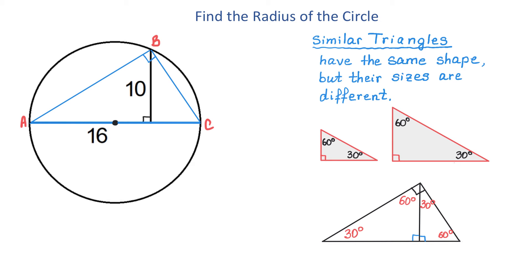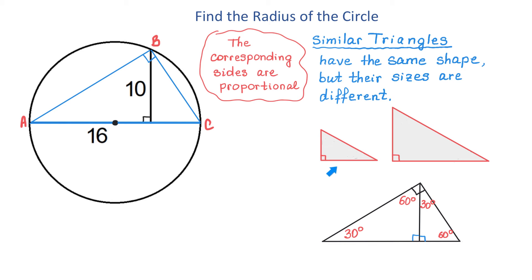What else we need to know about similar triangles is that the corresponding sides are proportional. For example, let's say the lengths of the sides of the small triangle are 3, 4, and 5, and the sides of the bigger triangle are 6, 8, and 10. The shortest side corresponds to the shortest side, the bottom side to the bottom side, and the hypotenuse to the hypotenuse. The ratios — 3 over 6, 4 over 8, and 5 over 10 — are all equal.